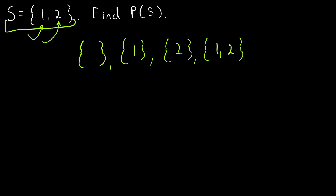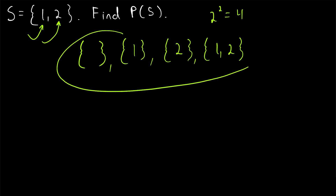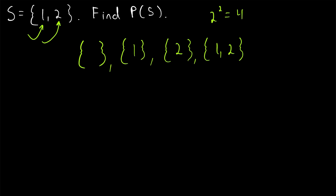How many subsets would we expect S to have? S has two elements, so it should have two to the power of two, or four, subsets. We've got four subsets, so we're done. That is the power set of S.